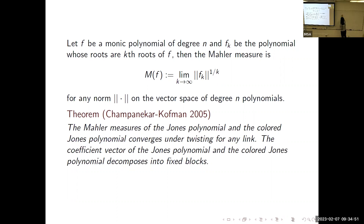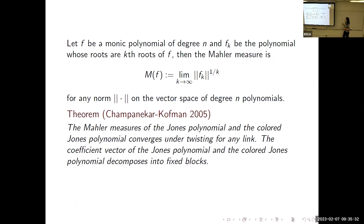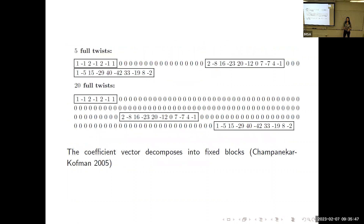What they showed is that the Mahler measure of the Jones polynomial and the colored Jones polynomial converge under twisting for any link. In particular, the coefficient vector of the Jones polynomial and also the colored Jones polynomial polynomially decomposes into fixed blocks. The orientation of the link doesn't matter for whether you do left or right twisting.